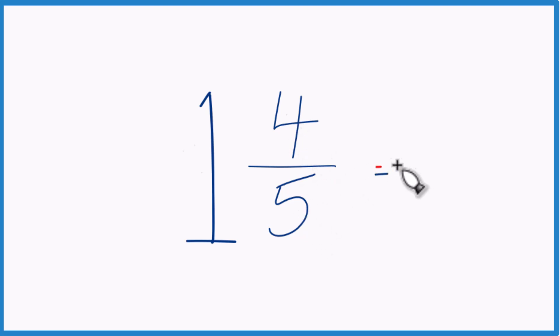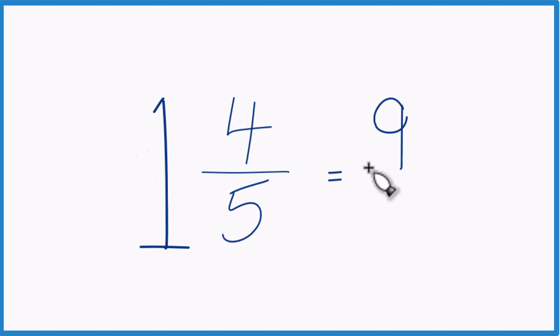And then 5 plus 4, that equals 9. Then just bring the denominator across and 1 and 4 fifths, this mixed number here equals the improper fraction 9 fifths.